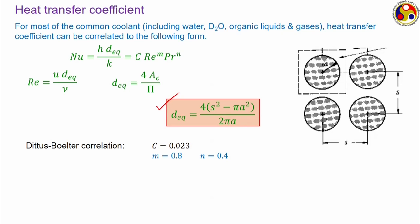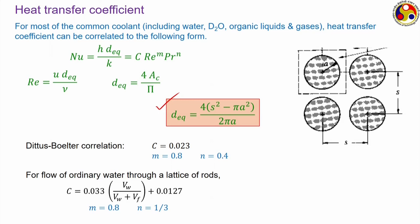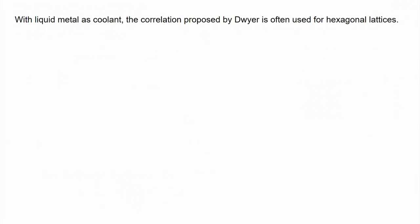Several options exist for the coefficients C, m, and n. The classical Dittus-Boelter correlation uses C = 0.023, m = 0.8, n = 0.4 (for heating). For flow of ordinary water through a lattice of rods, a correlation sometimes used in nuclear thermal hydraulics has m = 0.8, n = 1/3, and C expressed as a function of the ratio V_w/V_f — the volume of water to volume of fuel rod in one selected cell. Several other correlations are also applicable depending on coolant type.